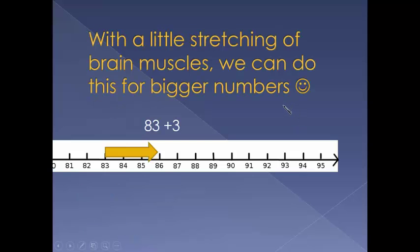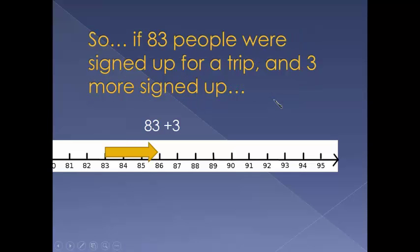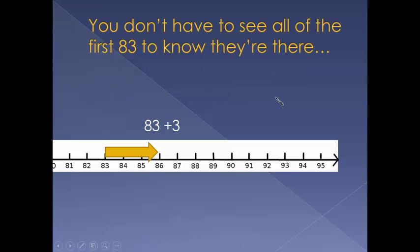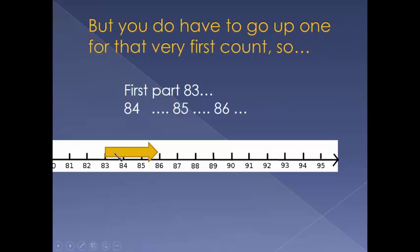With a little stretching of the brain muscles, we can do this for bigger numbers. If 83 people were signed up for a trip and 3 more signed up, you don't have to see all of the first 83 to know they're there. But you do have to go up 1 for that very first count.